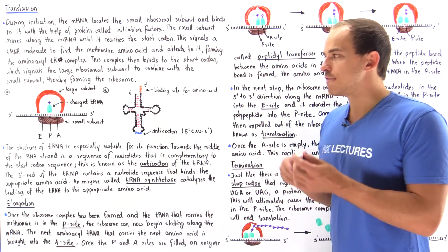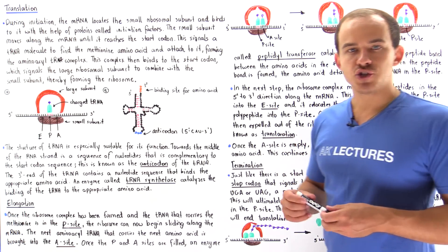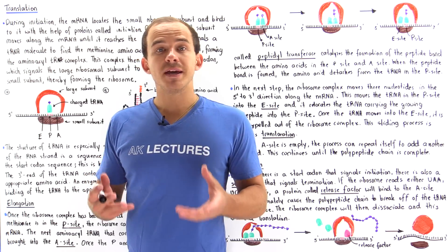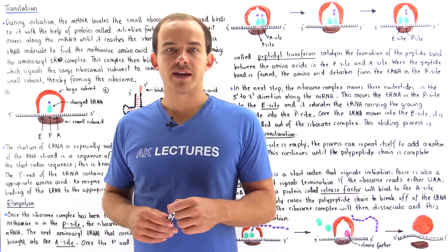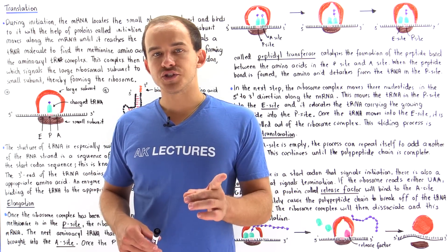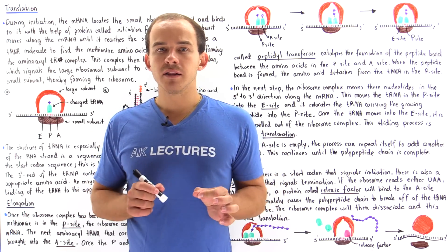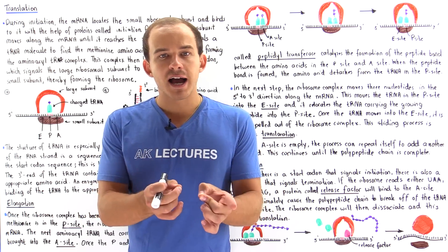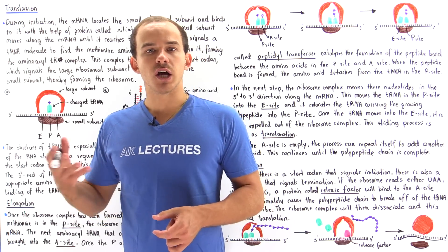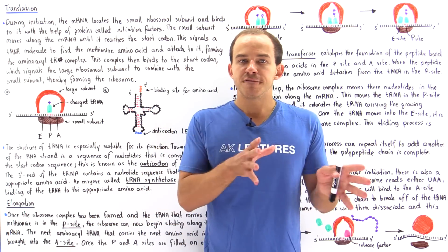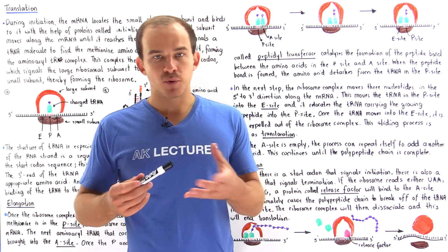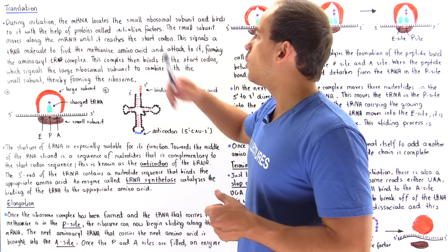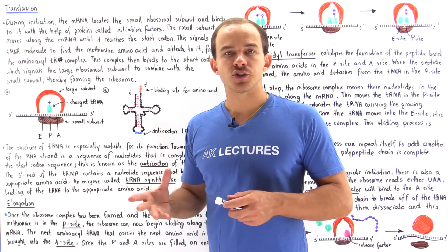Let's recall what the first step of translation is. As we discussed in the previous lecture, the first step is the initiation process. In this process, our mRNA molecule that codes for the protein finds the small subunit of the ribosome, with the help of protein molecules known as initiation factors.